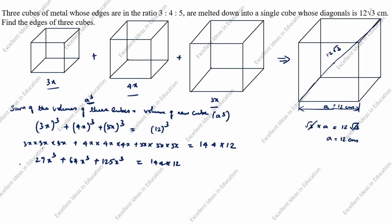Now we add the coefficients: 27 plus 64 plus 125. Adding these gives 216. So 216x cubed equals 144 into 12.